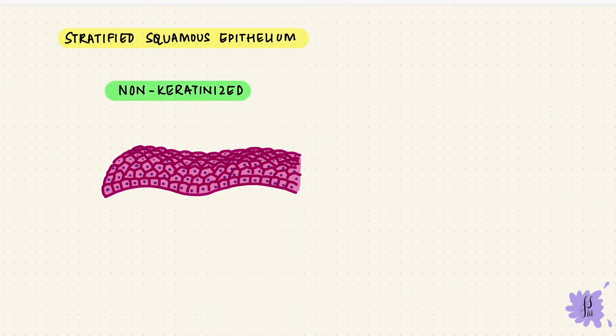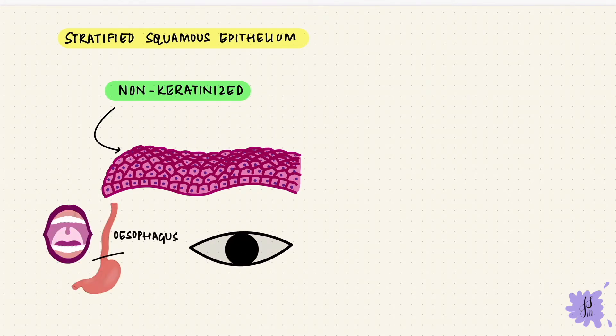Non-keratinized epithelium obviously doesn't have keratin and the topmost cells, they have nuclei, they are alive. They line moist surfaces. So examples for this would be some parts of the mouth and the esophagus and even the corneas.